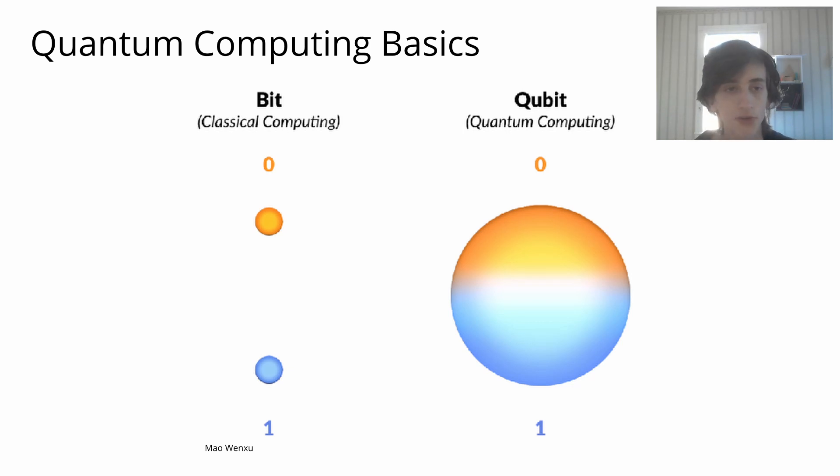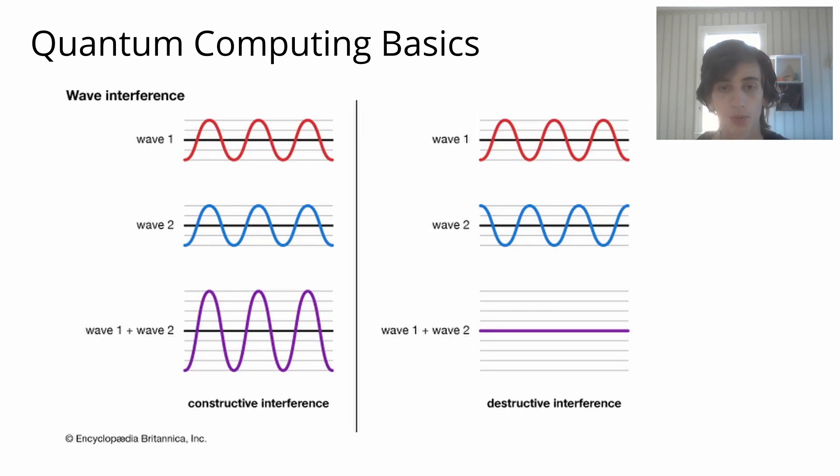This allows for 3 or 4 qubits to store 8 or 16 possible states respectively, all at the same time, while classical computers can only store one state at a time. Interference is another property of quantum computers, where qubits can interact constructively or destructively with each other, similar to waves, so that we can manipulate the probabilities of measuring certain states.